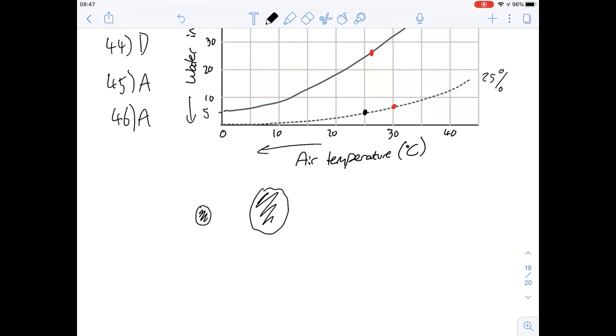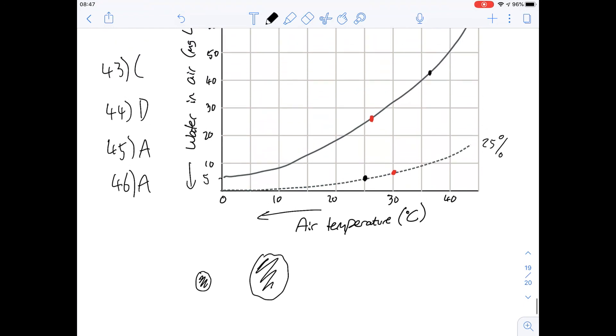Option D says nasal passages with a counter current blood flow. A counter current blood flow is described in the paragraph above and we're told that this vascular heat exchange surface is important for the cooling of the air. So we know that does improve the heat exchange, so we know that's not going to be the answer. That leaves us with A, short nasal passages, and that makes sense. So that was questions 43 to 46.